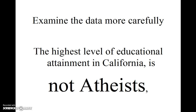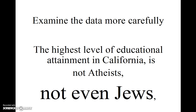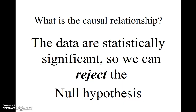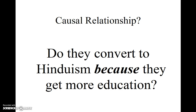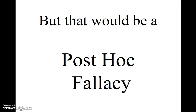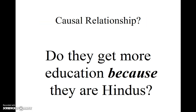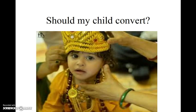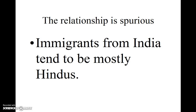If we examine California data even more carefully, the highest level of educational attainment in California is not the atheists — it's not even the Jews. It's Hindus. So, what is the causal relationship? The data are statistically significant, so we can reject the null hypothesis. Do people convert to Hinduism because they get more education? When you get your PhD, do you say you really want to worship a god with a blue body or an elephant head? No — that would be a post-hoc fallacy as well. Do they get more education because they're Hindus? Would it be a good idea to have your child convert to Hinduism so they'll stick out schooling more? I think that would be a post-hoc fallacy. The relationship is spurious.